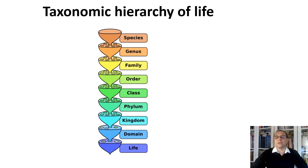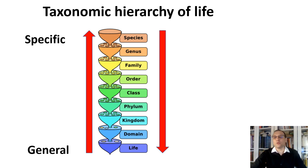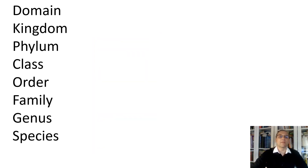What you see on this slide is the taxonomic hierarchy of life — all the taxonomic groups mentioned during this lecture. Going from bottom to top, we move from more specific to more general, with increasing similarity. Going from top to bottom, we move from more general to more specific. During identification of organisms, names are written in the following order: domain, kingdom, phylum, class, order, family, genus, species.